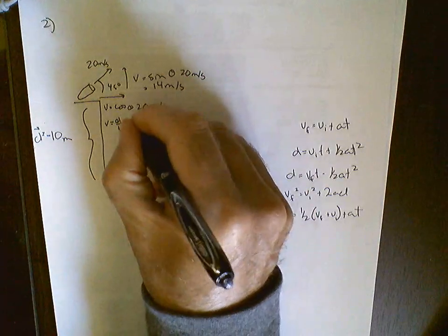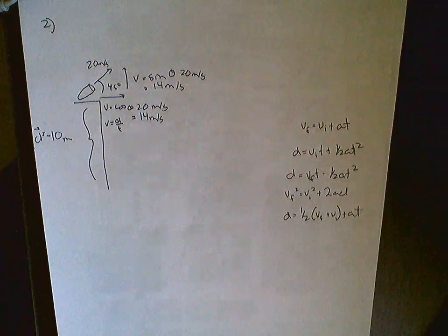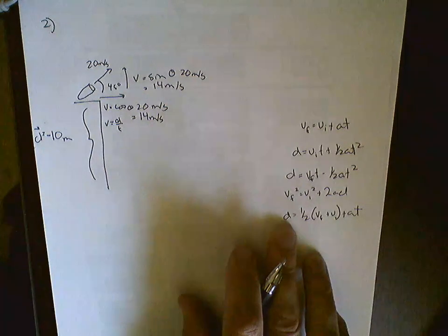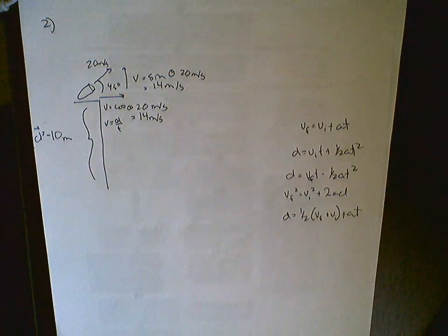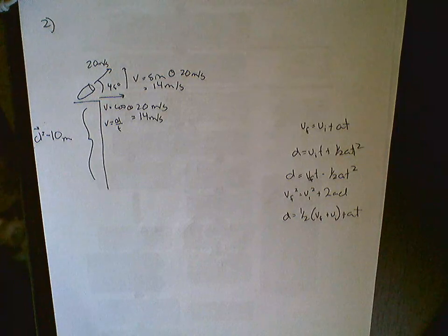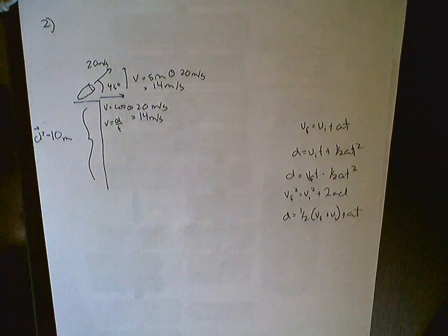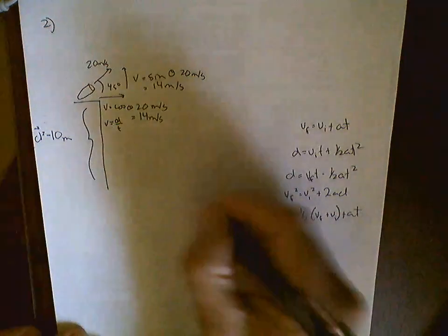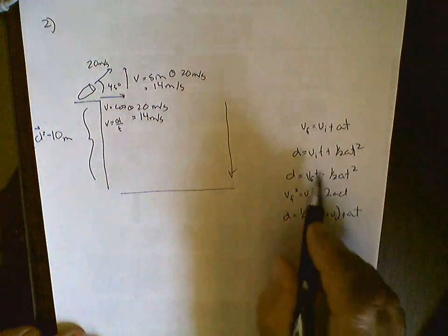But now what we want to do is we want to look at something coming off of a cliff. So we know that we have a D that's already given. So let's try and find T in this problem. Actually, let's get, hmm, where should we start here? There's many different things we can find. I guess we can find our, we've got our distance, we've got our acceleration, we've got our VI. We can find our VF at the bottom of the cliff coming down.